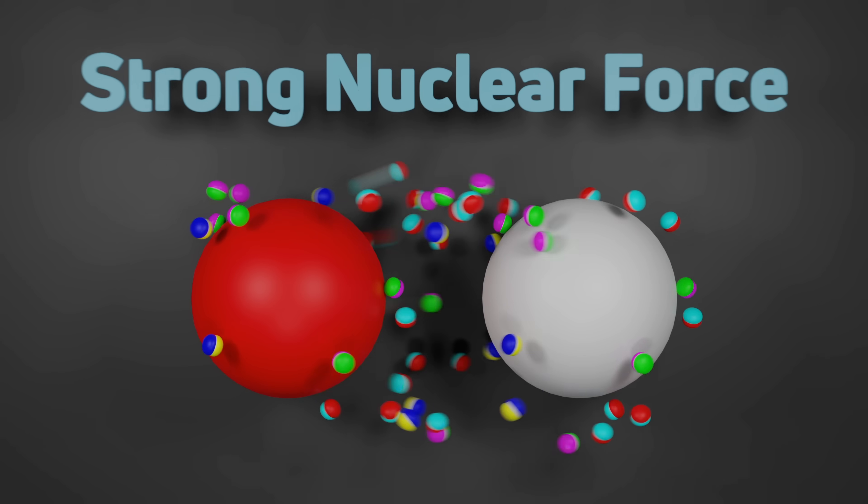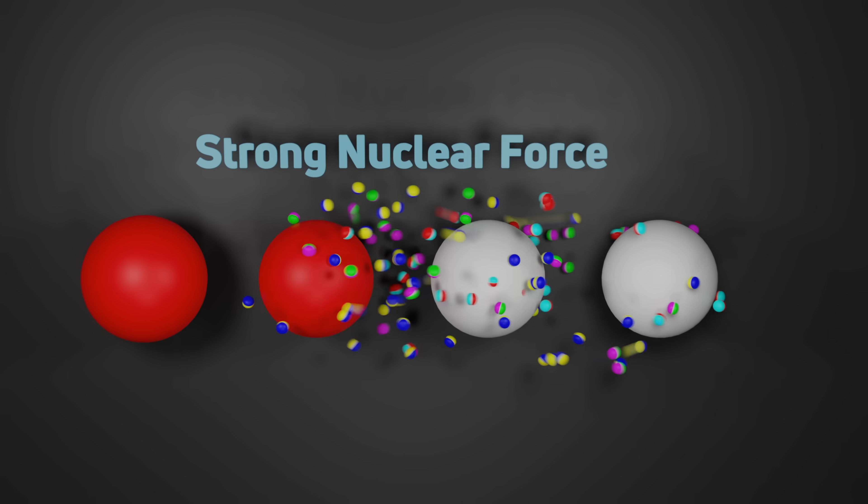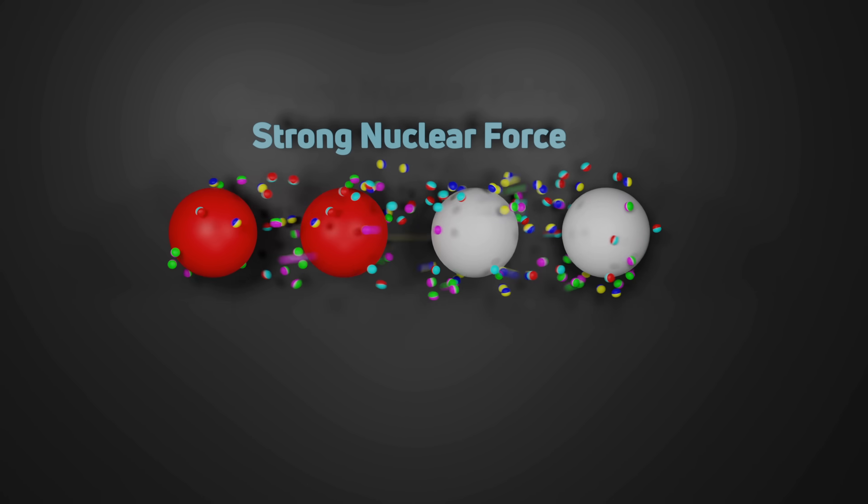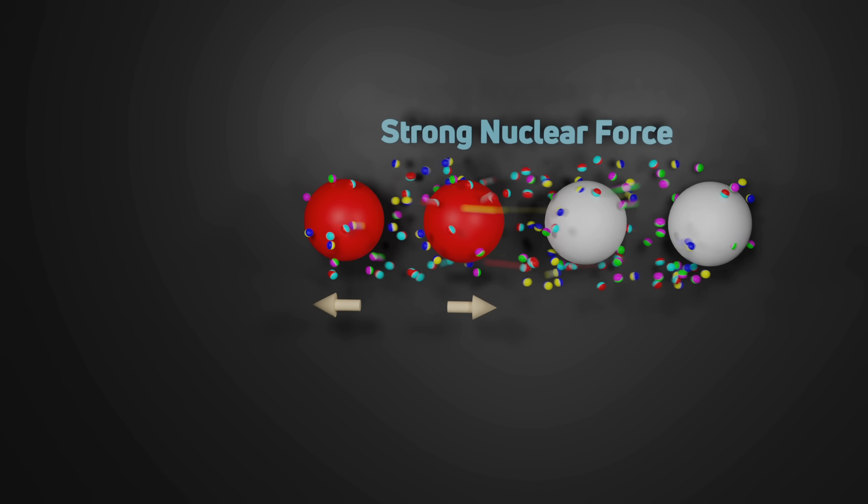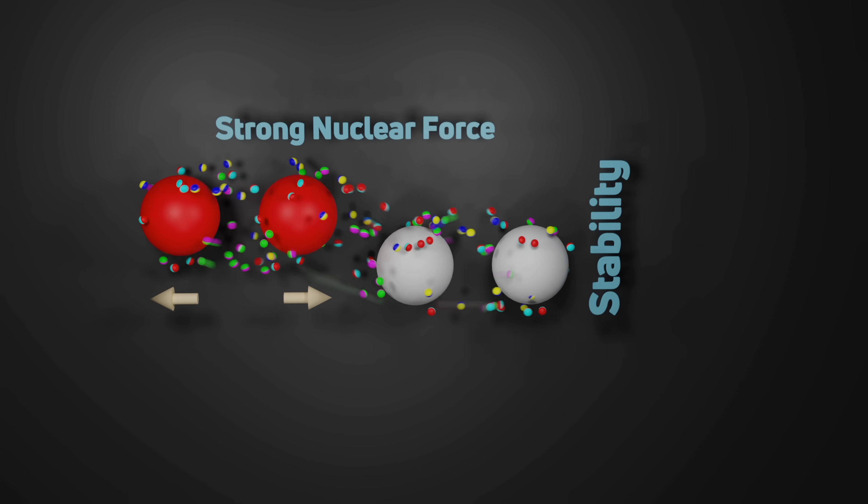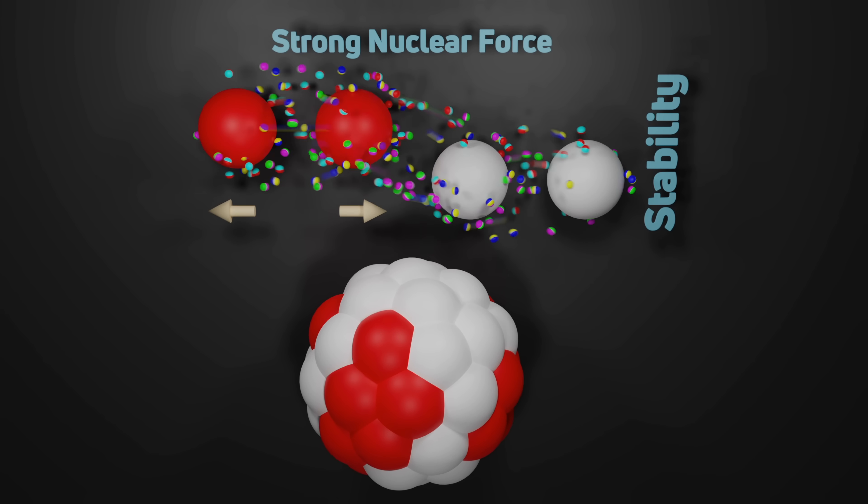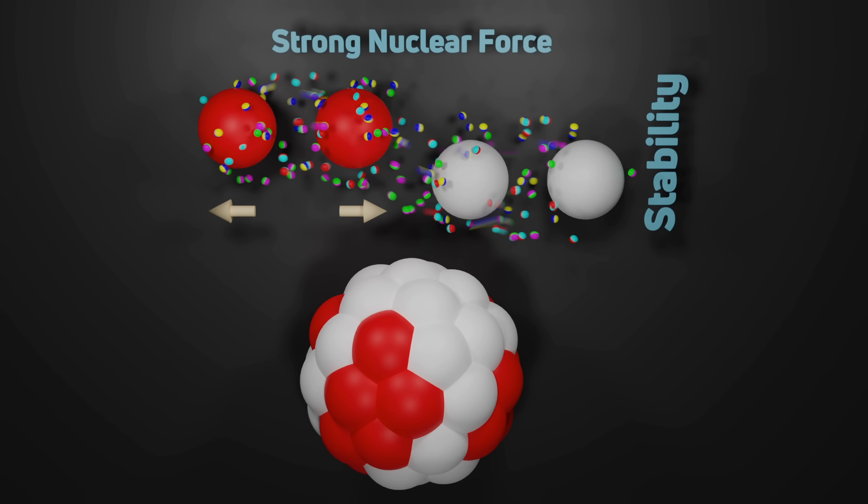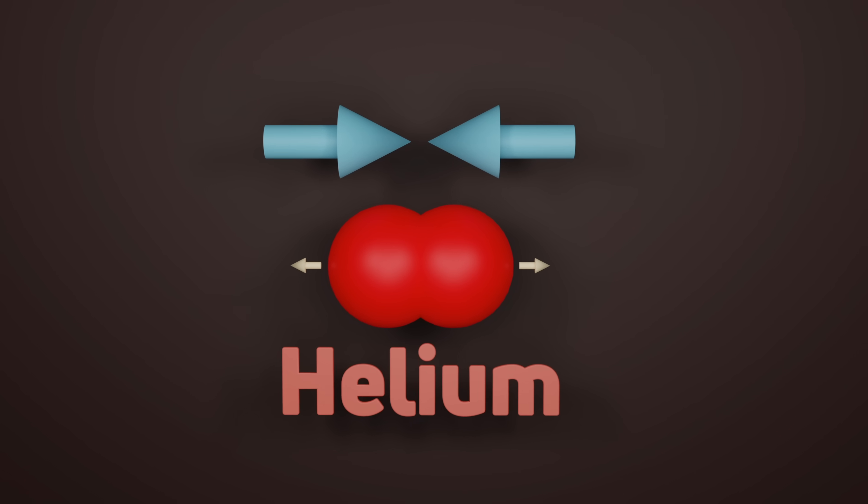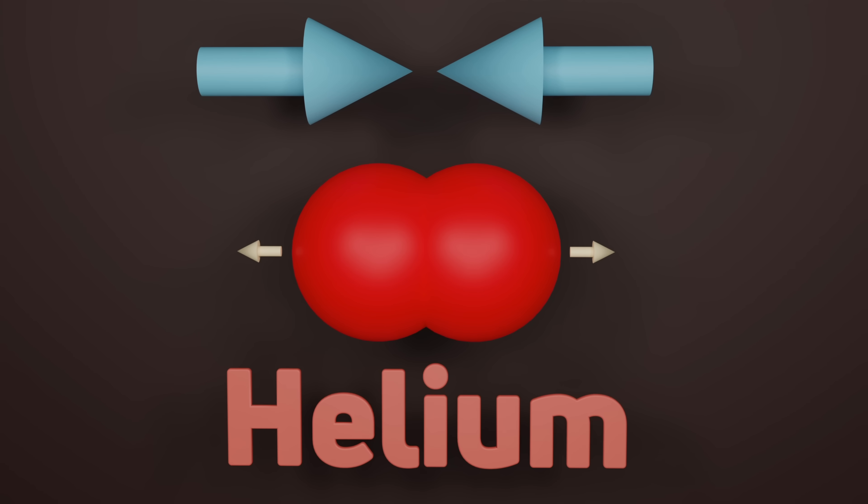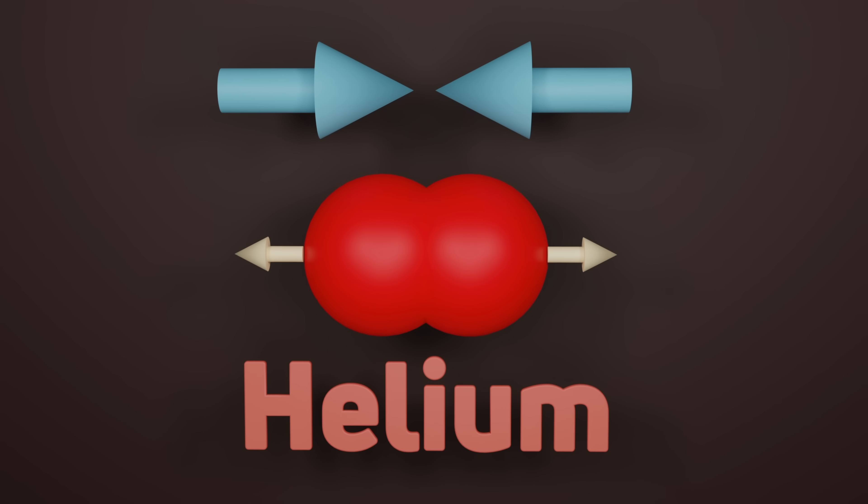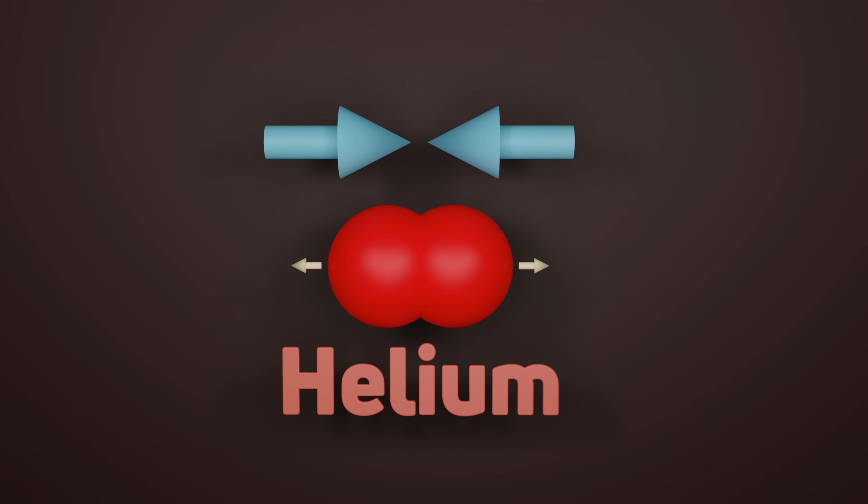Nuclei are held together by the strong nuclear force. Both neutrons and protons can attract one another through this force, but protons repel each other, and neutrons are less stable than protons. This means the most stable nucleus we can create is a combination of protons and neutrons. Let's look at an example. If we were to merge two protons together forming helium, both protons simultaneously repel and attract each other. The strong nuclear force is significantly stronger than this Coulomb repulsion, but even still, this intense repulsion prevents the diproton to achieve any state of stability.